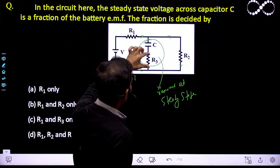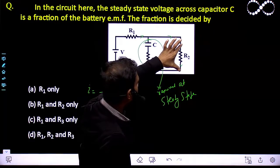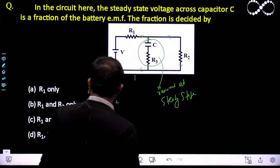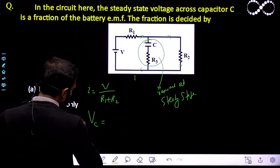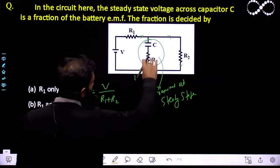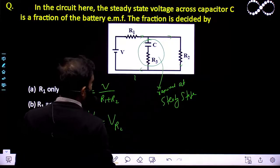Whatever potential drop across R2 is there, that will be the same potential drop across the capacitor. The potential drop across capacitor will be equal to potential drop across R2 because there is no current in the R3 part.